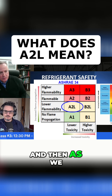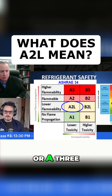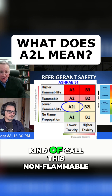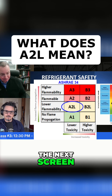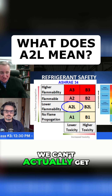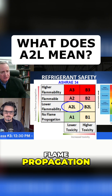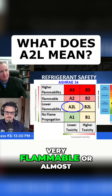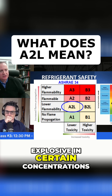The second digit is a 1, 2, or 3. A 1 is technically no flame propagation — a lot of people call this non-flammable, but as you'll see on the next screen, we can't actually get these to light. Then we have 2 for flammable, and 3 for higher flammability — very flammable, or in some cases even explosive in certain concentrations.